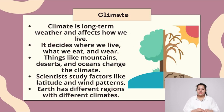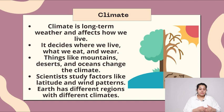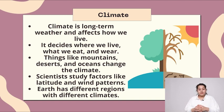Climate. Climate is a long-term weather pattern and affects how we live. It decides where we live, what we eat and wear. Things like mountains, deserts and oceans change the climate. Scientists study factors like latitudes and wind patterns. Earth has different regions with different climates.